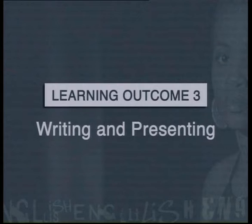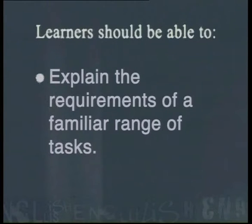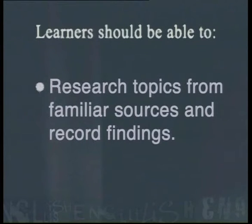The following lesson is linked to Learning Outcome 3, Writing and Presenting. It addresses the assessment standard that requires learners to demonstrate planning skills for writing for a specific purpose, audience and contexts. It also requires learners to explain the requirements of a familiar range of tasks. Learners should be able to decide on and apply the appropriate style, point of view and format of texts, and to research topics from familiar sources and record their findings.